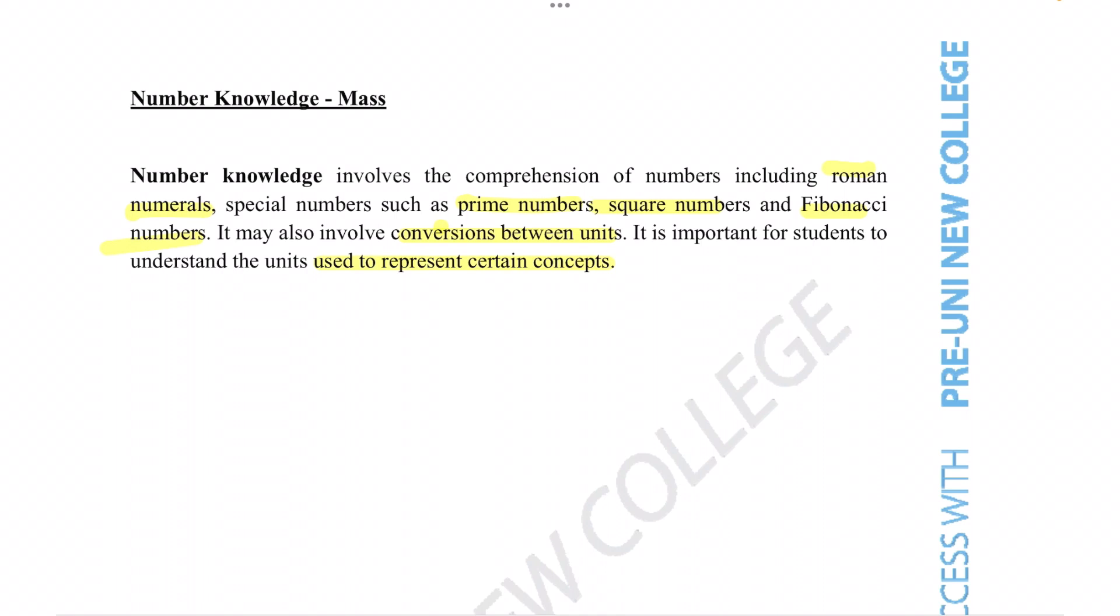This brief description tells us what we can expect in number knowledge questions. Because the name is number knowledge rather than, say, arithmetic operations, these questions dwell more on the conceptual value of numbers rather than calculations, which is why the question asks us about things like roman numerals, prime numbers, square numbers and Fibonacci numbers.